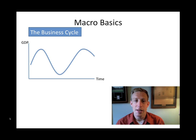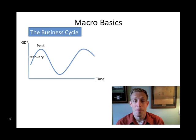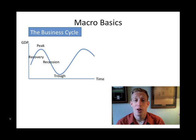Each part of the business cycle gets a name. The upward swing is called a recovery, and as long as the economy is in an upward phase or upward swing, we have a recovery period. At the top of the business cycle we have the peak, and the bad thing about being at a peak is that you only have one way to go, and that's down. The downward phase is called the recession. And then you hit the bottom — that's called the trough — and the only good thing about being in a trough is you only have one direction to go, and that's back up into another recovery.